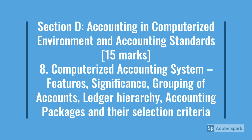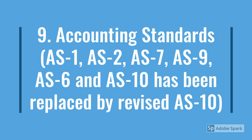Section D: Accounting in Computerized Environment and Accounting Standards, 15 marks. Under this, divided into 2 parts: 1. Computerized Accounting System — Features, Significance, Grouping of Accounts, Ledger Hierarchy, Accounting Packages and Their Selection Criteria. 2. Accounting Standards — AS1, AS2, AS7, AS9; AS6 and AS10 have been replaced by Revised AS10.